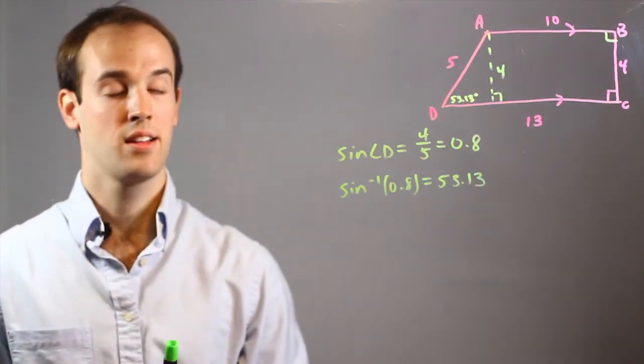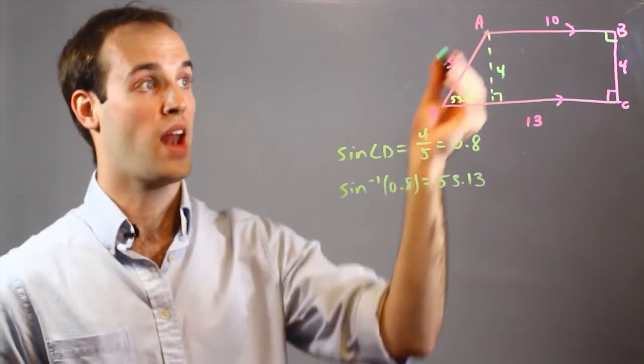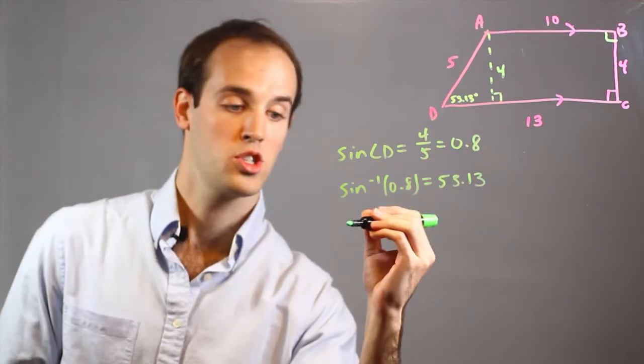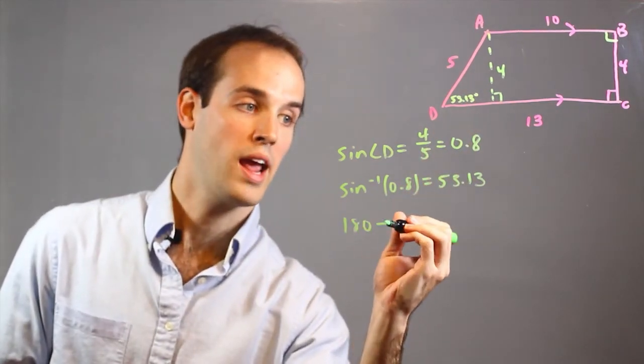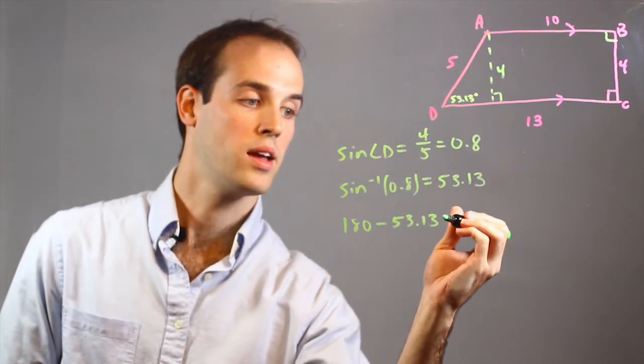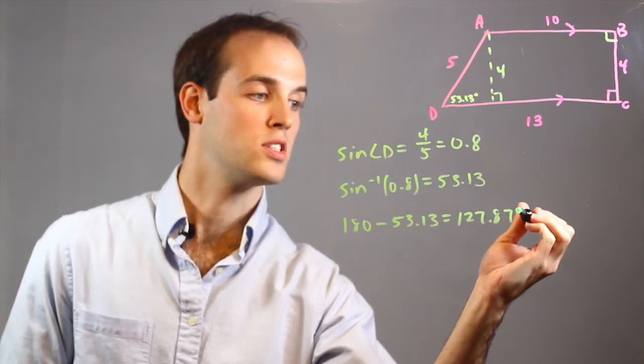And again, because it is a trapezoid and I know that the top and bottom must be parallel lines, I know that angle A must be supplementary to angle D. Which I can find by doing 180 minus 53.13. And it equals 126.87 degrees.